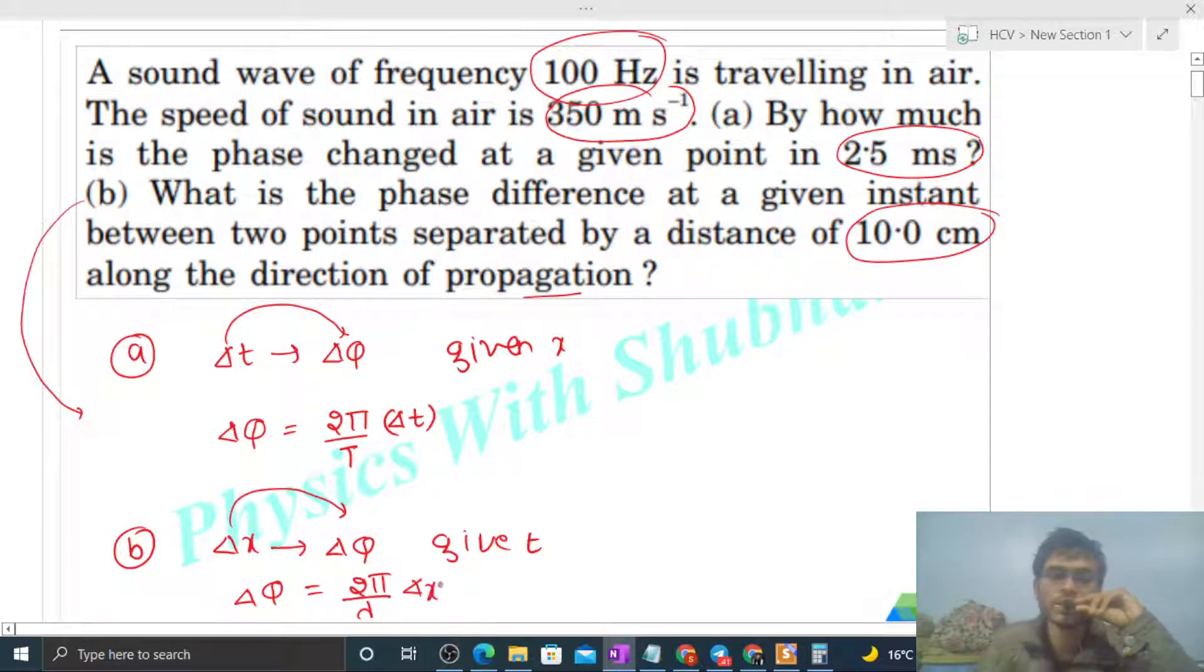Now look, here the time difference given is 2.5 × 10^-3 seconds (milliseconds), and position difference is also given: 10 centimeters, so that is 0.1 meters, right?